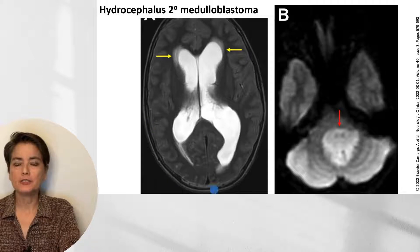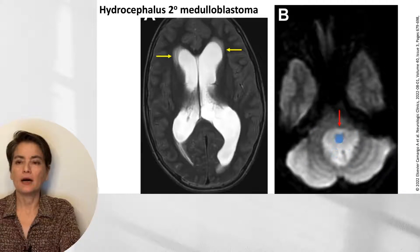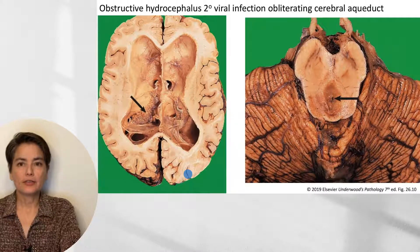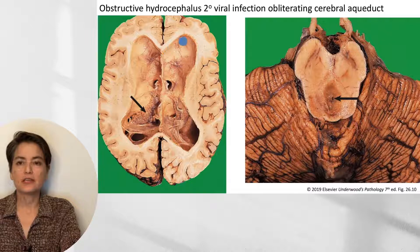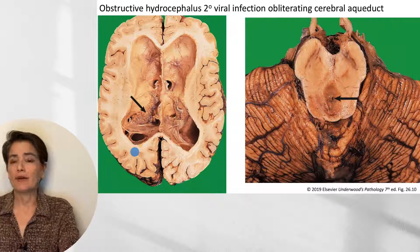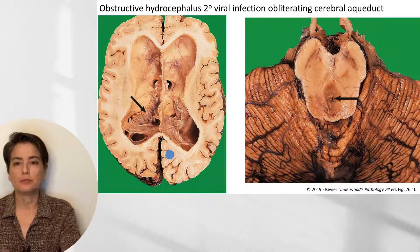Here you can see an imaging study of an individual with hydrocephalus secondary to a medulloblastoma, which is blocking the outflow of CSF, causing it to build up in the lateral ventricles. There's even a little bit of leakage of this fluid into the periventricular space due to this increased pressure. Here's another example of obstructive hydrocephalus due to viral infection that obliterated the cerebral aqueduct — again, you can see just how enlarged the lateral ventricles are. We can also see hydrocephalus ex vacuo, which is what we see when we have atrophy of the brain, typically in older individuals, where cerebrospinal fluid simply fills up the excess space within the skull.